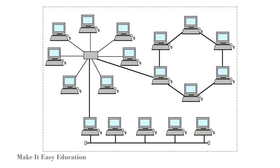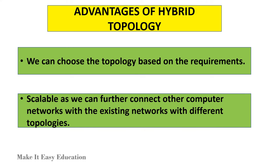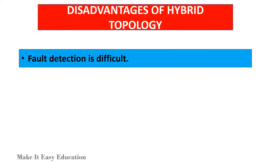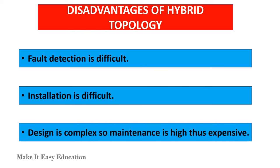Hybrid topology. A combination of two or more topologies is known as hybrid topology. For example, a combination of star, ring, and bus topology is a hybrid topology. Advantages: We can choose the topology based on the requirements. Scalable, as we can further connect other computer networks with the existing networks with different topologies. Disadvantages: Fault detection is difficult, installation is difficult, design is complex, so maintenance is high, thus expensive.